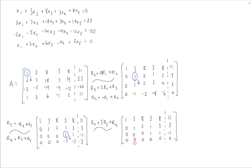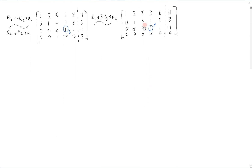Now we see that we have a row of all zeros, therefore we only have three pivot positions. Now we're going to use the pivots once again to create zeros above them. Looking at this pivot position, the operations are row 2 plus negative row 3 to replace row 2, and row 1 plus negative 3 times row 3 to replace row 1, and we get this matrix.